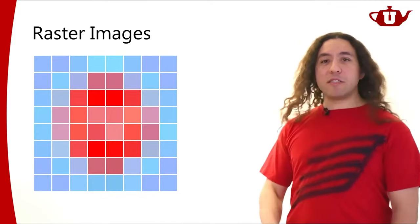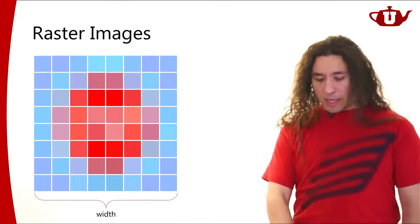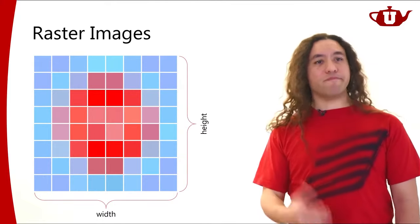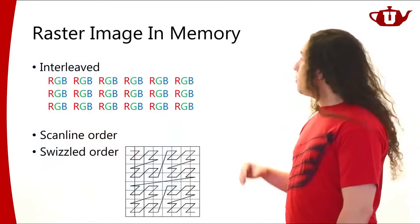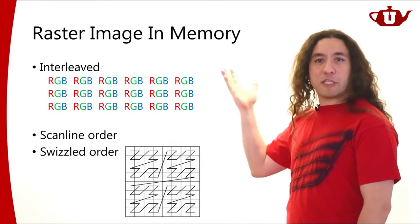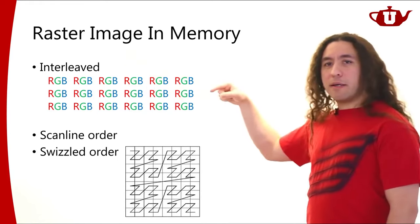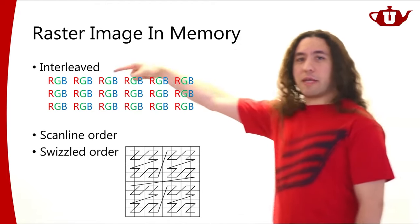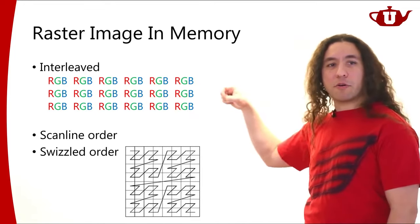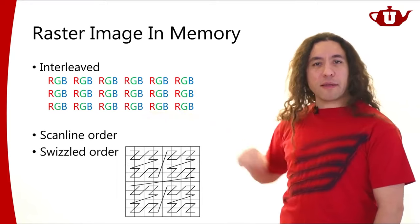A raster image made out of all these pixels will have a width and a height, which we refer to as the resolution of the image. We typically store pixels in interleaved order — like RGB, RGB, RGB for each pixel. You can think of this as a 1D array representing a 2D image, where the array starts and goes in scanline order to the next row. That's the typical way of storing pixels.